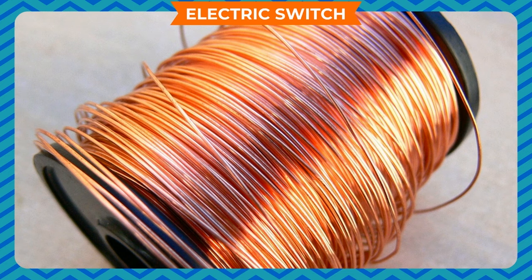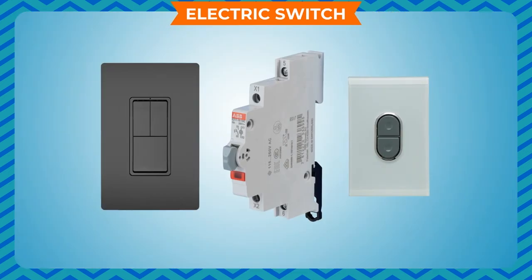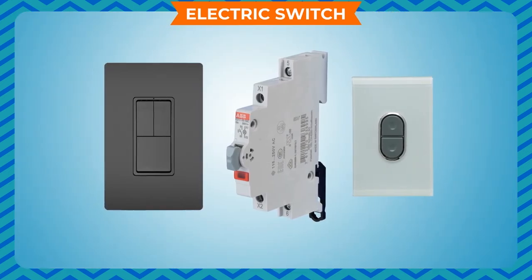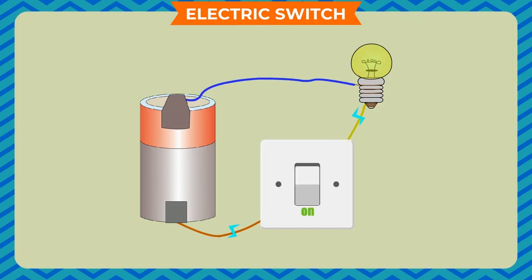A conducting material is used in the electric switch. Various types of electric switches are used. When the switch is on, the circuit is said to be a closed circuit. In this case, the electric current flows from the cell to the electric device connected to the circuit, and the device is in operation.